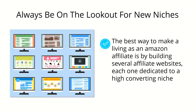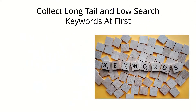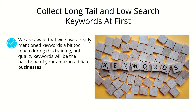Always be on the lookout for new niches. The best way to make a living as an Amazon affiliate is by building several affiliate websites, each one dedicated to a high-converting niche. Those people making millions in Amazon affiliate revenue are not doing it with just one website — they have an army of affiliate websites and they are putting their hearts and souls into keeping them relevant.